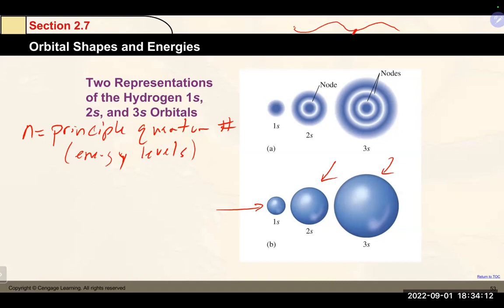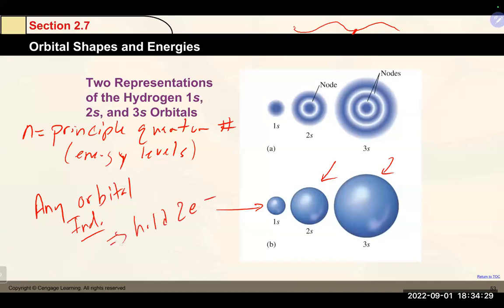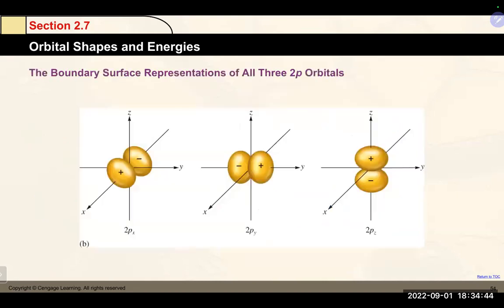Any individual orbital can only hold two electrons, regardless of which orbital you're talking about or which energy level it's on.